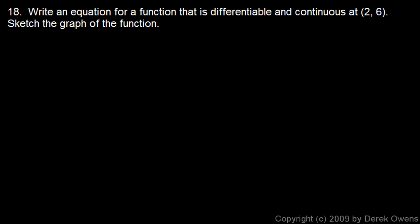We're still talking about differentiability and continuity, and we'll go through a few more examples here. These are rather open-ended. Write an equation for a function that is differentiable and continuous at (2, 6), and sketch the graph. There's an infinite number of possible answers for this one, but at the point (2, 6), the graph has to be continuous and smooth in order for it to be differentiable at that point. So any function going through that point works.